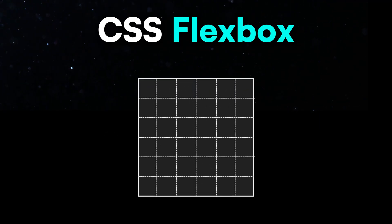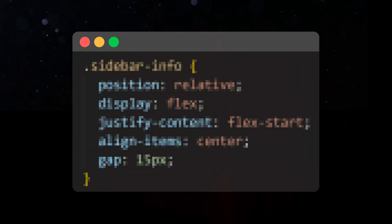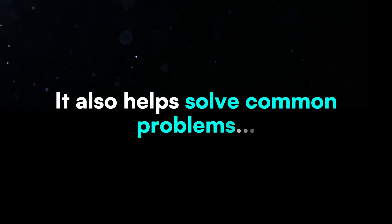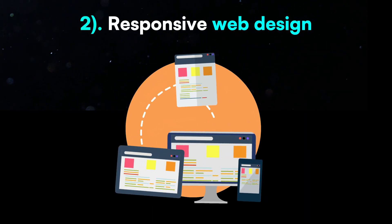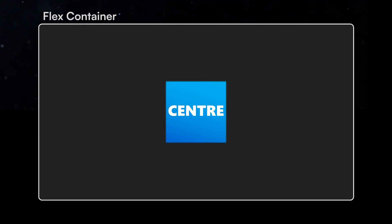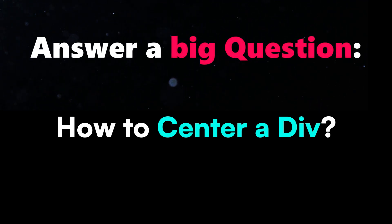What is Flexbox? Flexbox is a simple way to arrange items in rows or columns. With just a few lines of code, you can create clean and responsive layouts. It also helps solve common problems like centering a div or making a website fit all screen sizes. In this video, we'll learn how to position elements anywhere – top, bottom, left, right, center, or in between. And of course, we'll answer a big question – how do you center a div? Let's get started.